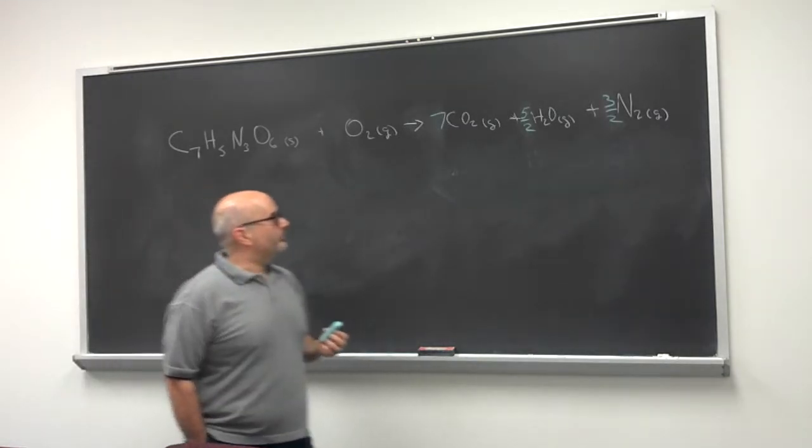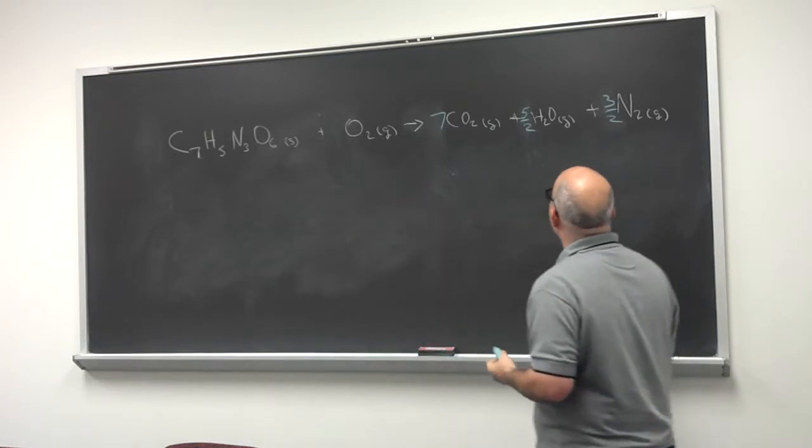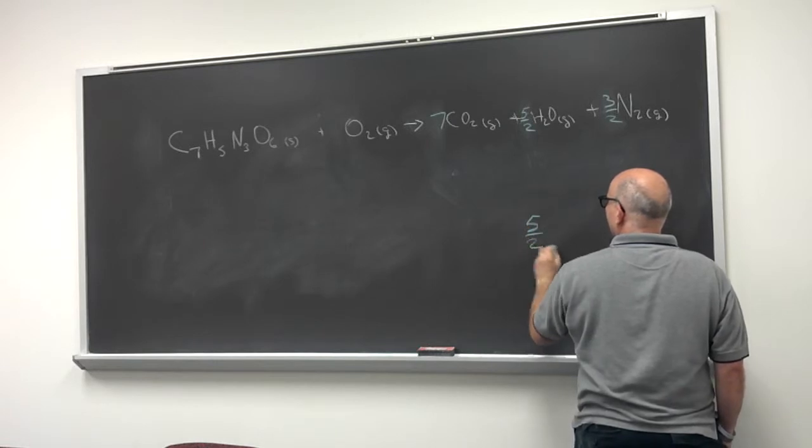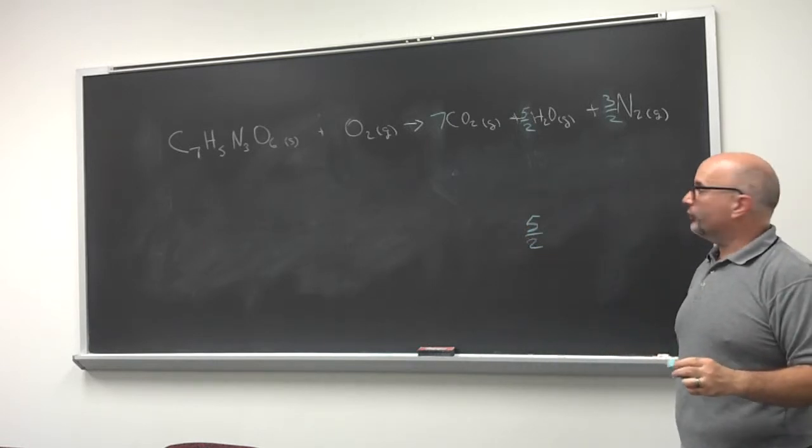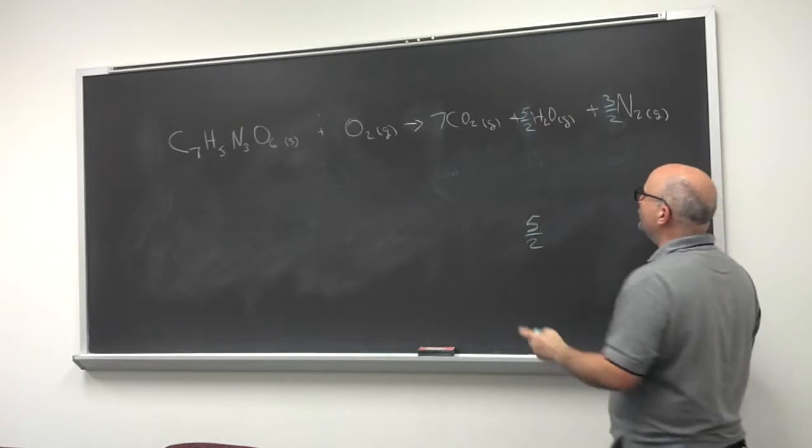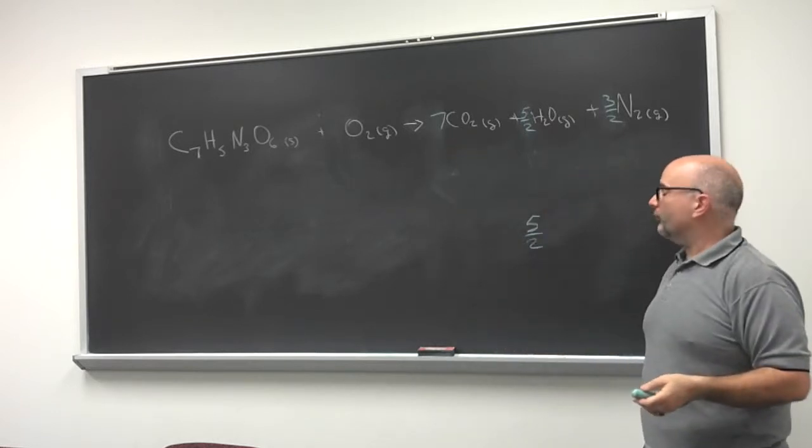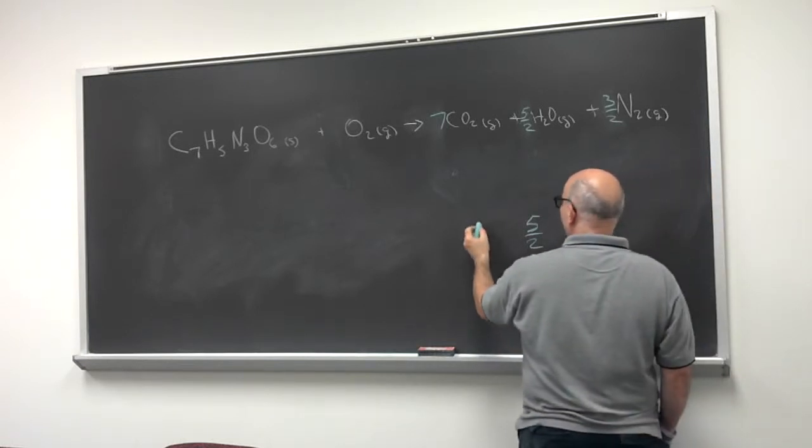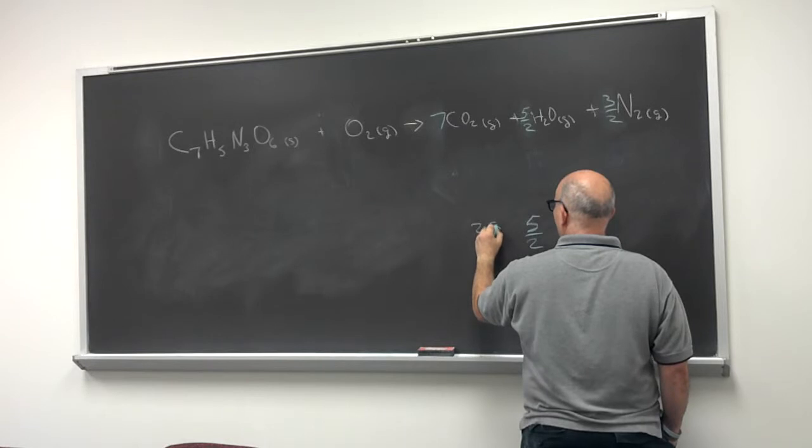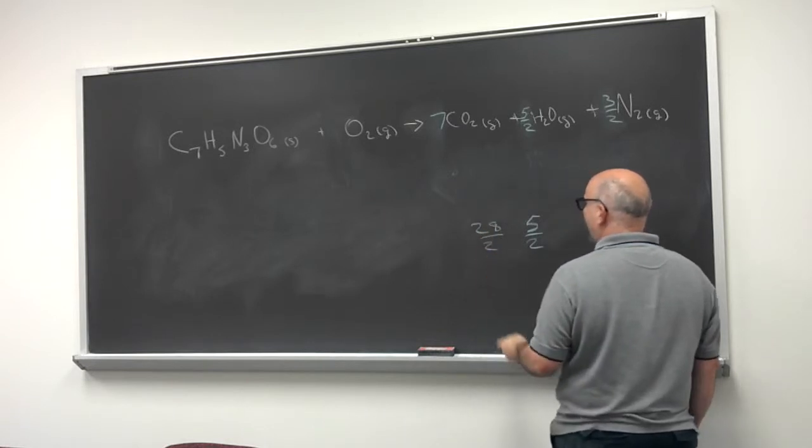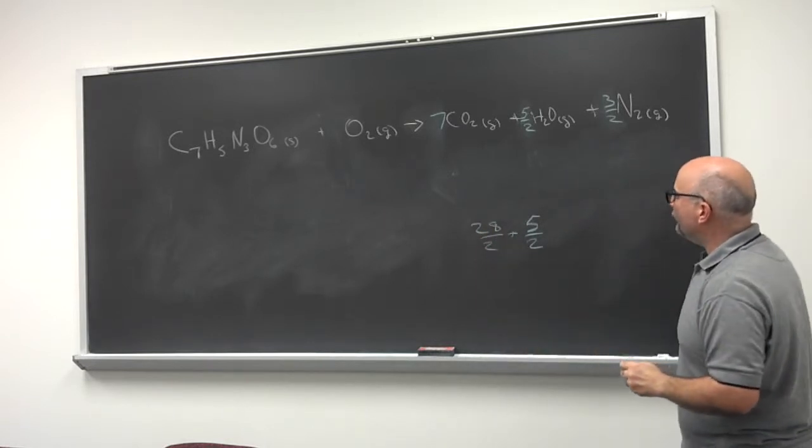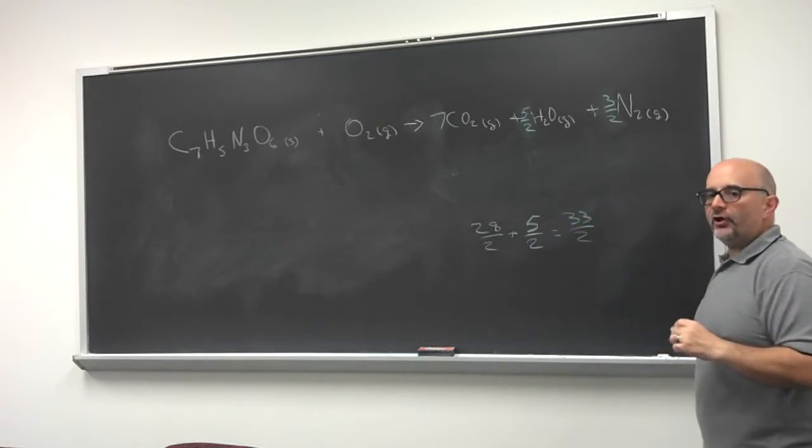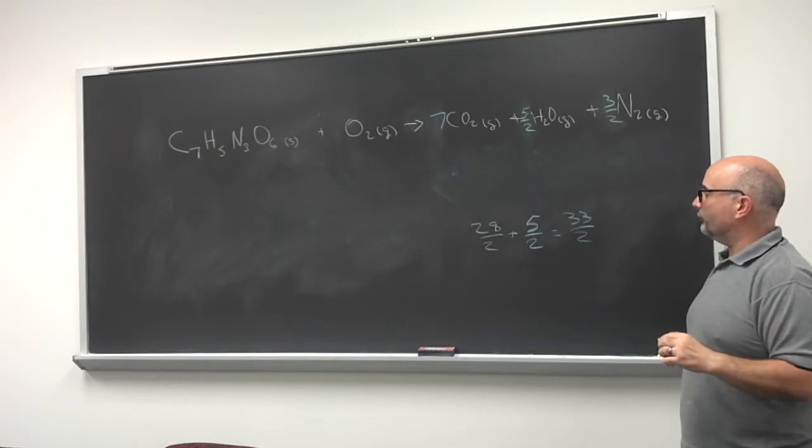So let's see how many oxygen atoms we need on the product side. Now, we need 5 halves of oxygen atoms for the water molecules and we need 7 times 2, or 14 atoms of oxygen for the carbon dioxide molecules. But I'm going to write that 14 as 28 halves for now. So to balance this, we need a total of 33 halves of oxygen atoms on the reactant side.